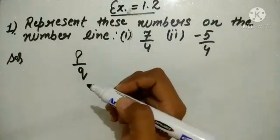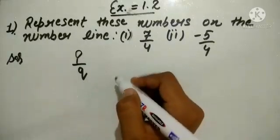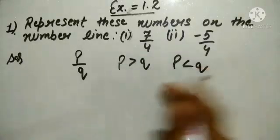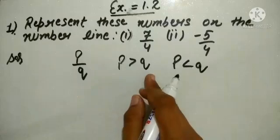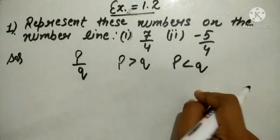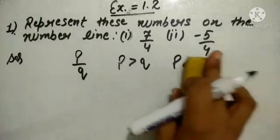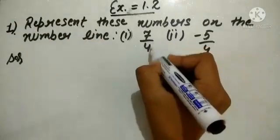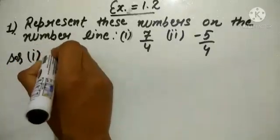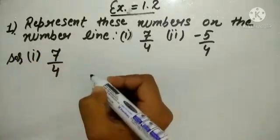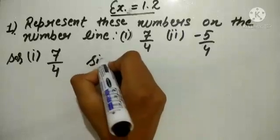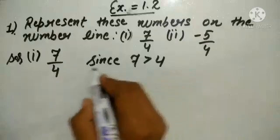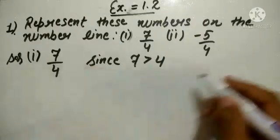To represent these rational numbers on the number line, we have to check firstly whether P is greater than Q or P is less than Q. We have to check whether the numerator is greater than the denominator or the numerator is less than the denominator. After that we can represent this number on the number line. As you can see the first part is 7 over 4. Since 7 is greater than 4, we have to convert this number into mixed form.